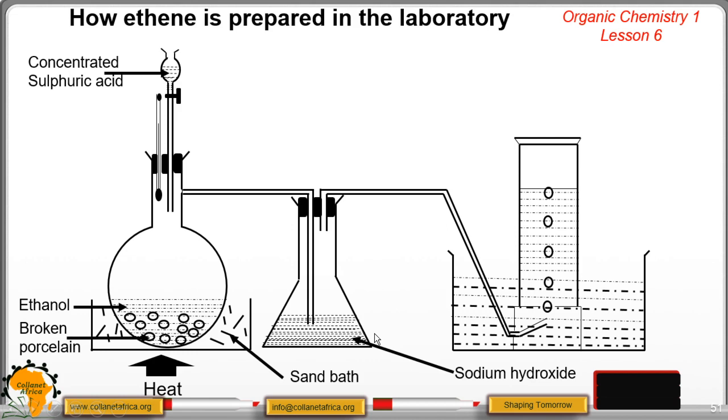Then we have our ethene gas. This is the water. We collect the gas through upward delivery, downward displacement of water method. And we utilize that method because ethene is slightly soluble in water and therefore it cannot dissolve in water.